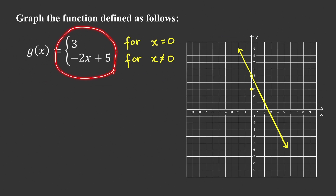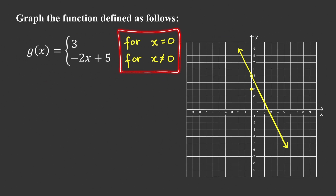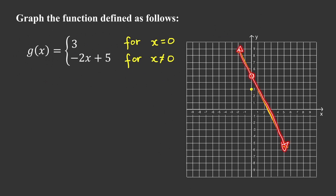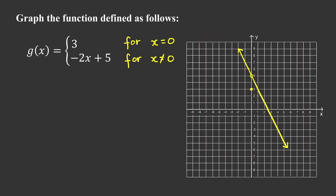In the second example we have the same formulas, but different domain restrictions. Here g equals 3 only when x equals 0, giving the single point (0, 3). When x is not equal to 0, we use the same line as before, but we exclude only the point where x equals 0, leaving an open dot there. So the graph is a line with a hole, plus a separate point.